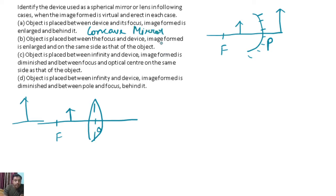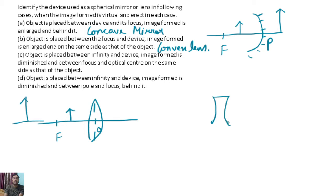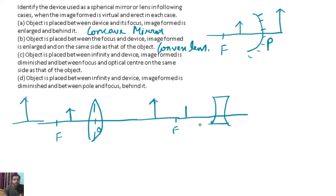There is another option: which lens has the object placed between infinity and the device, with the image formed diminished and between the focus and optical center on the same side as that of the object? This is a concave lens. The image is formed between the focus and optical center.